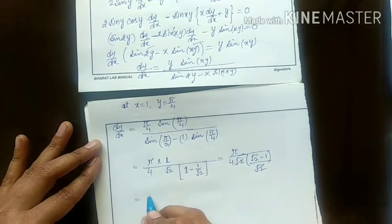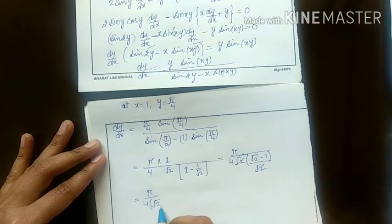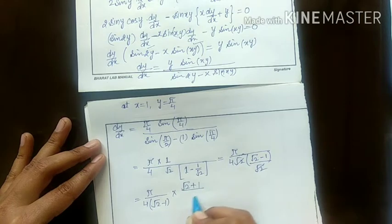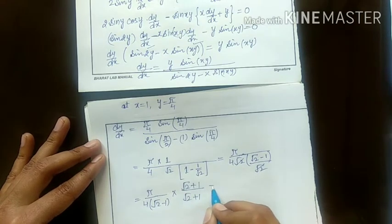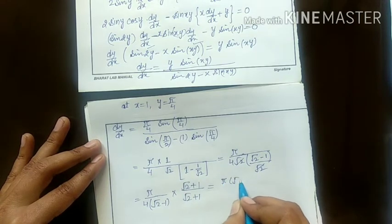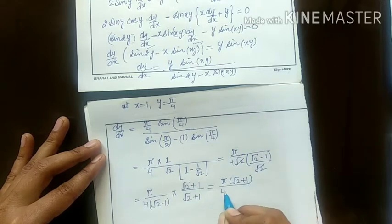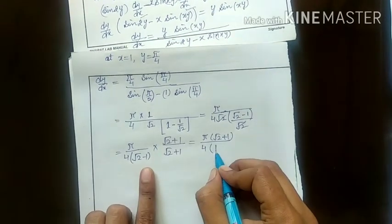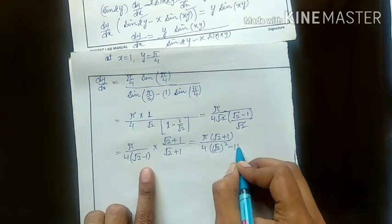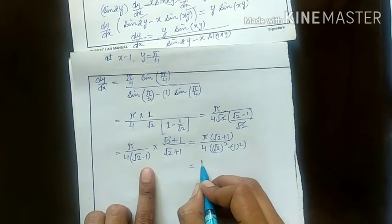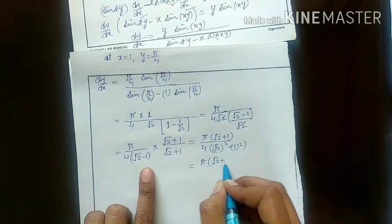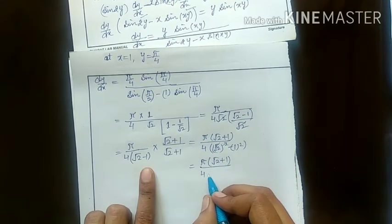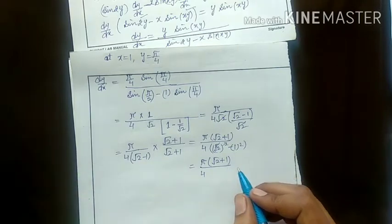So this is pi upon 4 root 2, and when you take under root 2 minus 1 in the denominator, rationalize by multiplying and dividing by the opposite sign. So this is pi into under root 2 plus 1 upon 4, using the formula a minus b into a plus b equals a square minus b square. This is pi(under root 2 plus 1) upon 4 into (2 minus 1), which is 1. So this example is done.